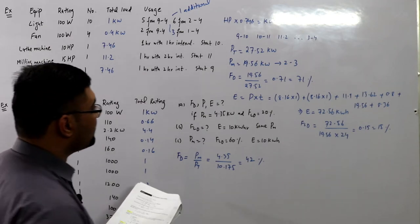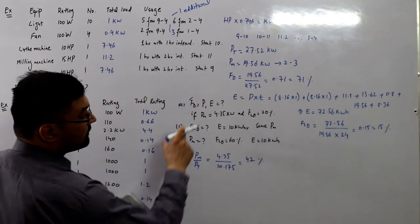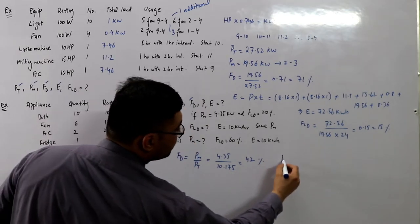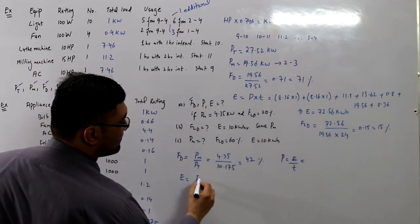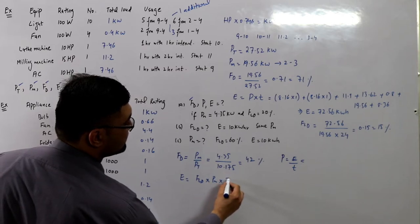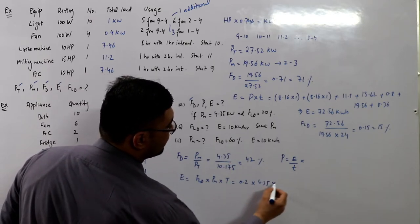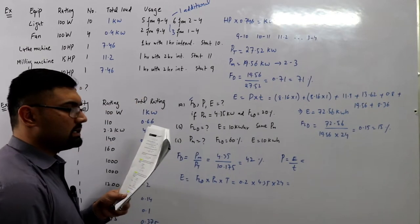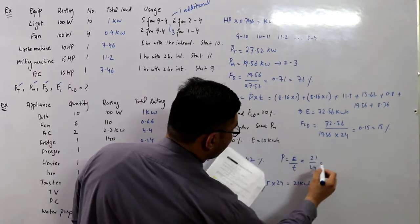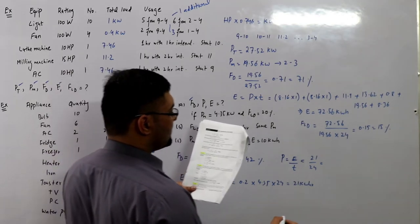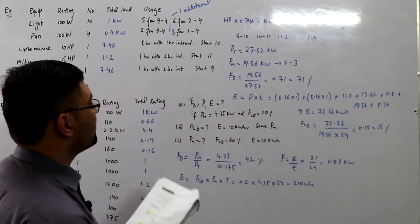For daily energy consumption, first find e from the load factor formula: e = fld × maximum demand × time. fld is 20.2%, maximum demand is 4.35 kW, time is 24 hours. The number of energy units is 20.88 kilowatt hours, approximately 21 kWh. The average load p = e / t = 21 / 24, which gives 870 watts or 0.87 kilowatts.